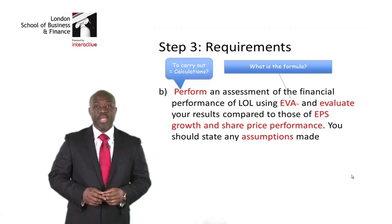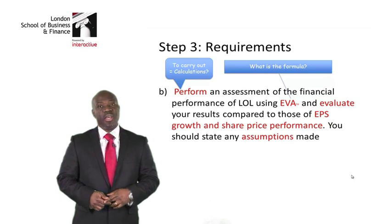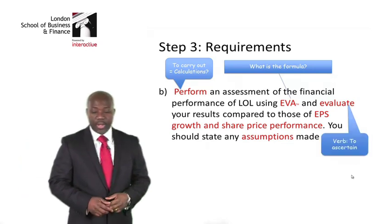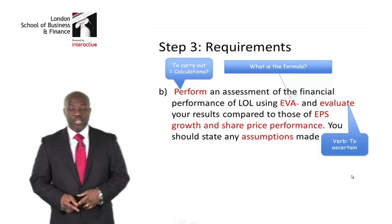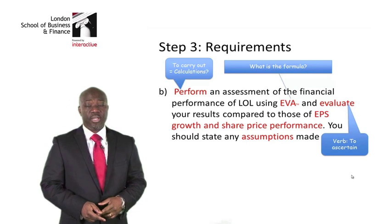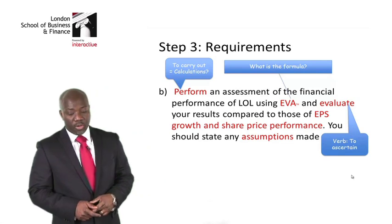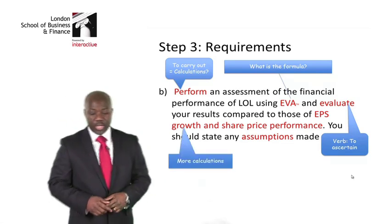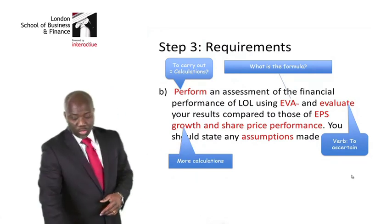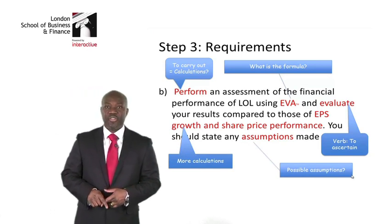Another thing I can see here is I am being asked to use EVA, so I ask myself what formula I need to use in calculating EVA. I am also being told to evaluate, which means to ascertain. The examiner is giving us a clue to evaluate our results compared to those of EPS growth, meaning I need to do more calculations. I have also been told of share price information, which I know I might have to get from the scenario.